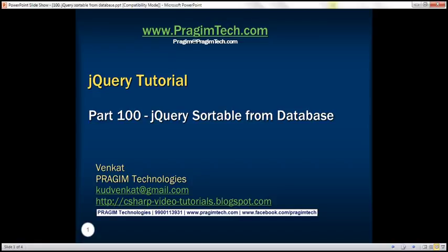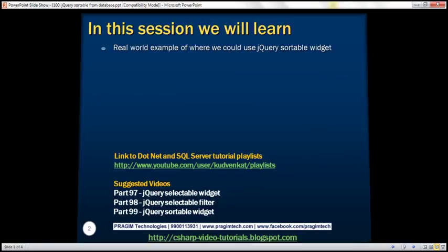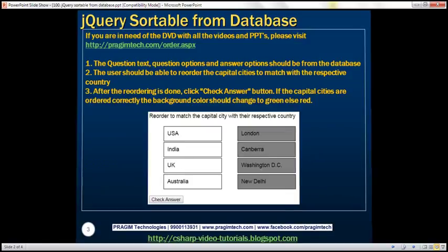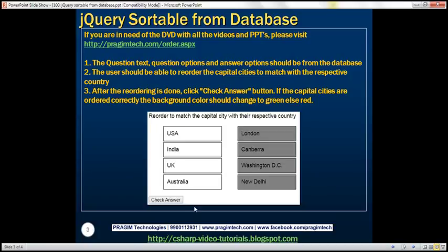This is part 100 of jQuery tutorial. In this video, we'll discuss a real-world example of where we could use jQuery Sortable Widget. Here is what we want to do: we have a question which we want the user to answer. The question is: reorder to match the capital city with their respective country. On the left we have some countries and on the right we have capital cities, and we want the user to be able to reorder these capital cities to match with their respective country.